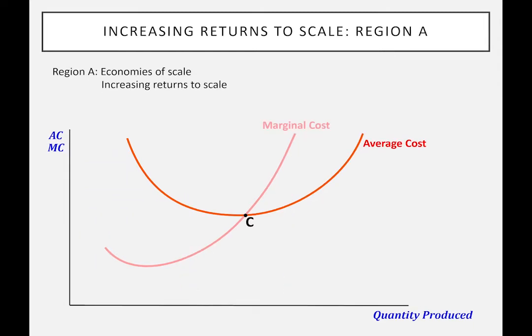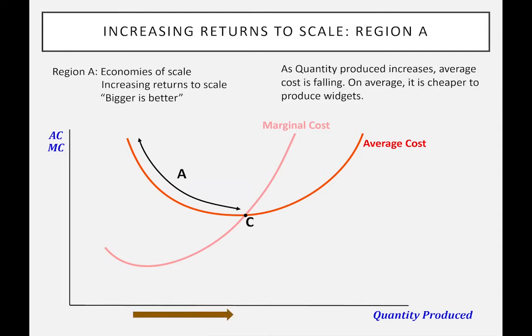I'm going to look at two regions here. Starting with region A: in region A, the average cost is decreasing. That means if we increase production along this area, the average cost is going to be lower. We say there are economies of scale, or increasing returns to scale.